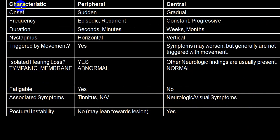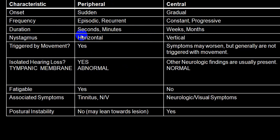Comparing peripheral versus central vertigo: onset in peripheral is usually sudden while in central it is gradual and progressive. Peripheral is recurrent and episodic; central is constant and progressively increasing with additional neurological symptoms and signs. Duration in peripheral is a few seconds to minutes; in central it lasts weeks and months. Nystagmus in peripheral is usually horizontal; in central it is vertical or rotatory. Vertigo triggered by head movement favors peripheral vertigo. Isolated hearing loss is frequent in peripheral — unilateral disturbance — while neurological findings are common in central.